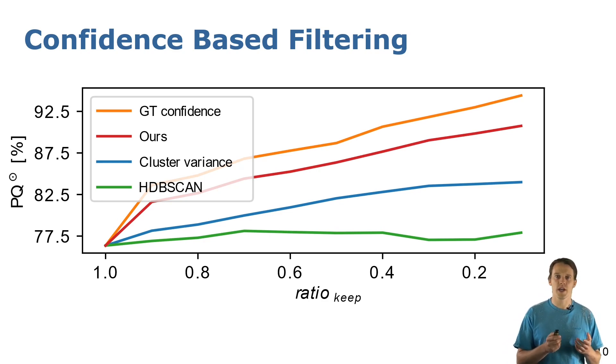Our approach in red is only slightly below this upper bound and is better than the cluster variance, which is shown in blue, for all the keep ratios. Filtering the predictions by HDBSCAN instead gives hardly any benefit, as you can see here from the green line.